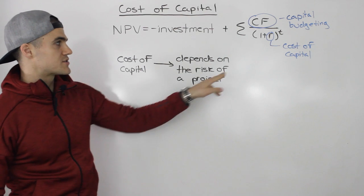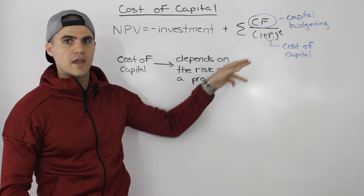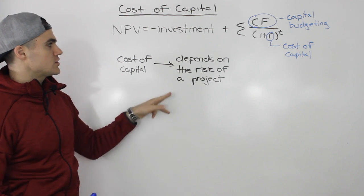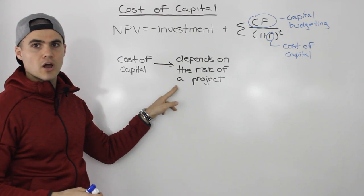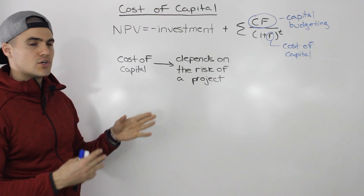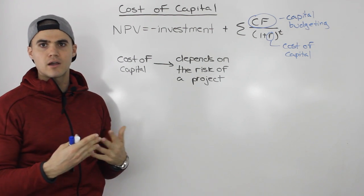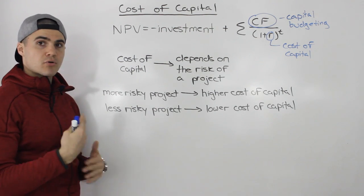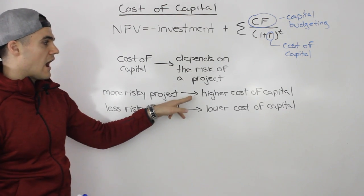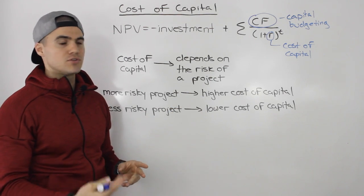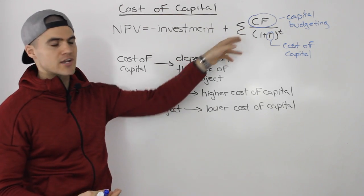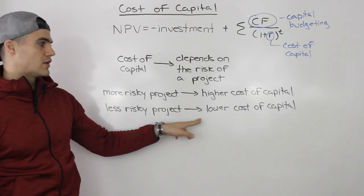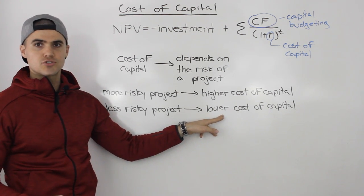The cost of capital — this R value, this discount rate that you're using to discount the cash flows of a project — should depend on the risk of a project. So the cost of capital should be varying per project depending on its risk level. The more risky a project you take on, the higher cost of capital you should be using to discount those cash flows. And the less risky a project you take on, the lower cost of capital you should be using.